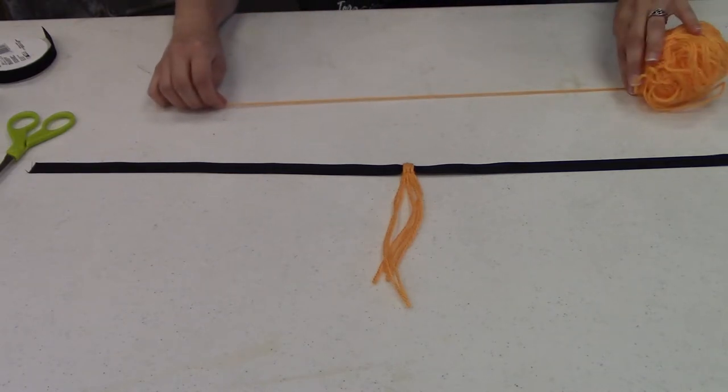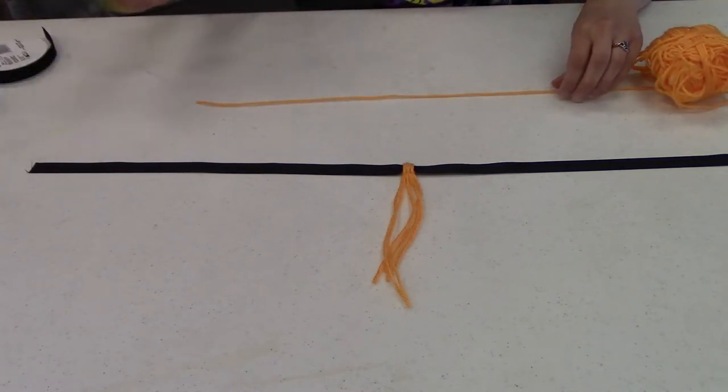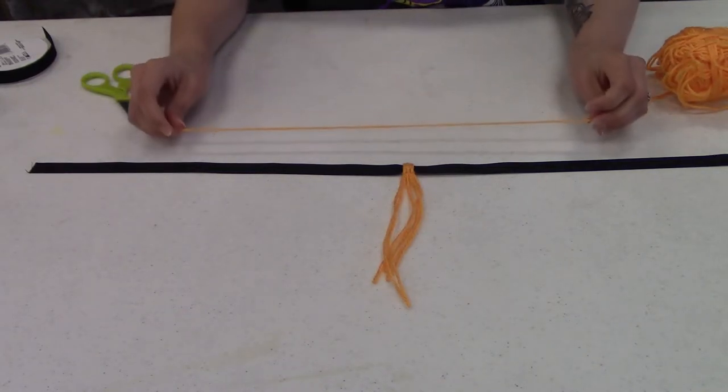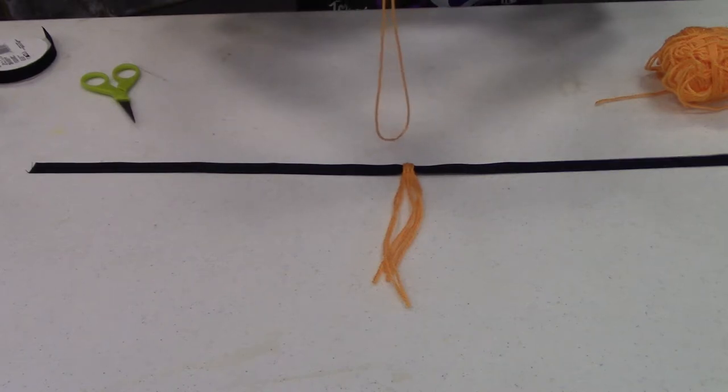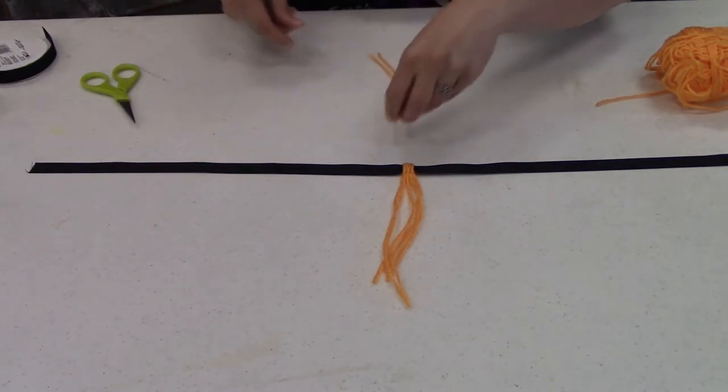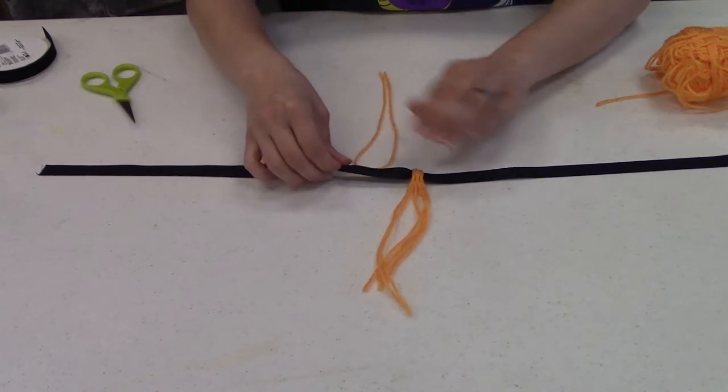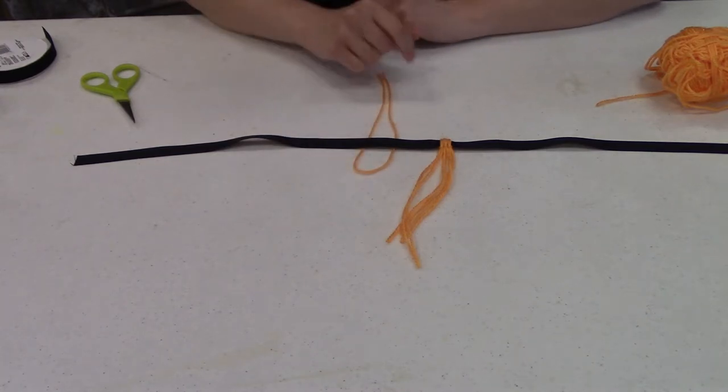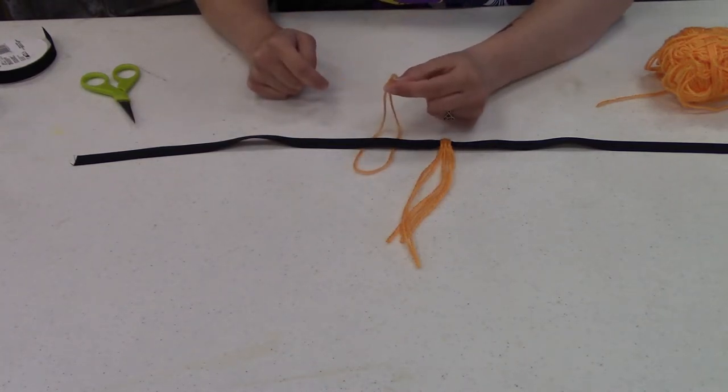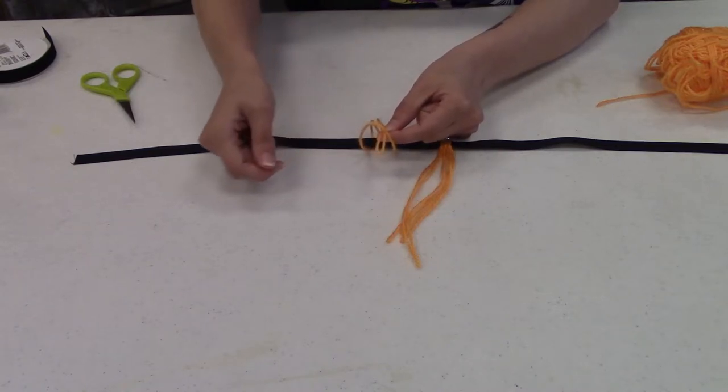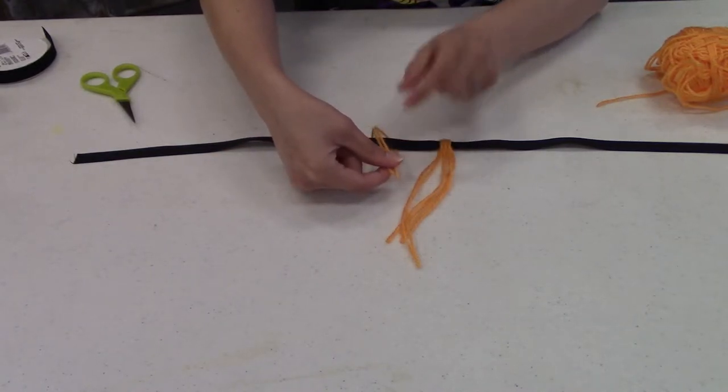Just do the same thing. I'm going to do it one more time. So you can see what I'm doing. I cut a piece of yarn, folded it in half. Lay it under your ribbon. All right, there's the loop. Ends, take the ends, feed it through the loop, and pull it through.